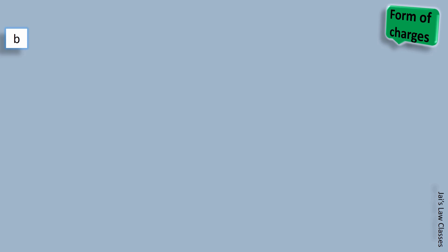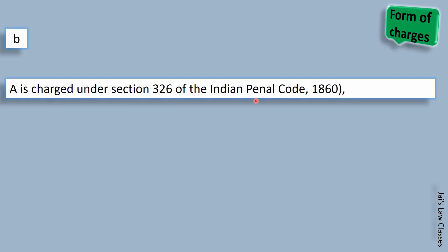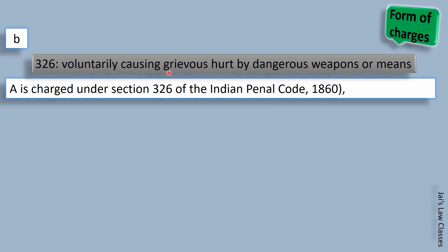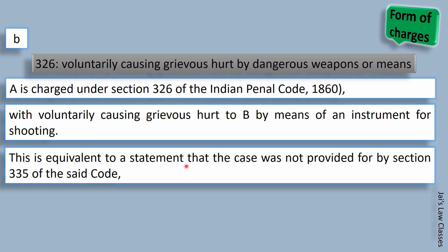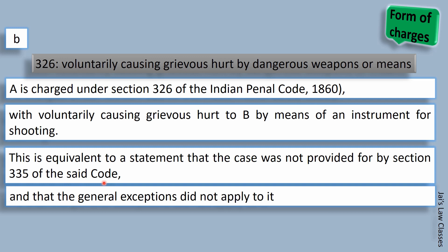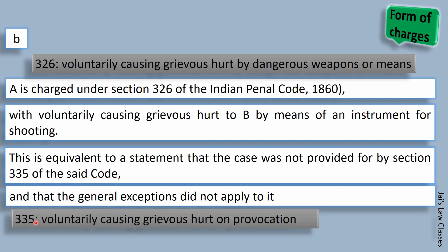Second illustration: A is charged under Section 326 of IPC — voluntarily causing grievous hurt by dangerous weapons or means — with voluntarily causing grievous hurt to B by means of an instrument for shooting. For a law student or advocate, this is equivalent to a statement that the case was not provided by Section 335 of the said code and that the general exceptions did not apply to it. Section 335 is 'voluntarily causing grievous hurt on provocation.' Reading illustrations gives you more knowledge, so always read them.